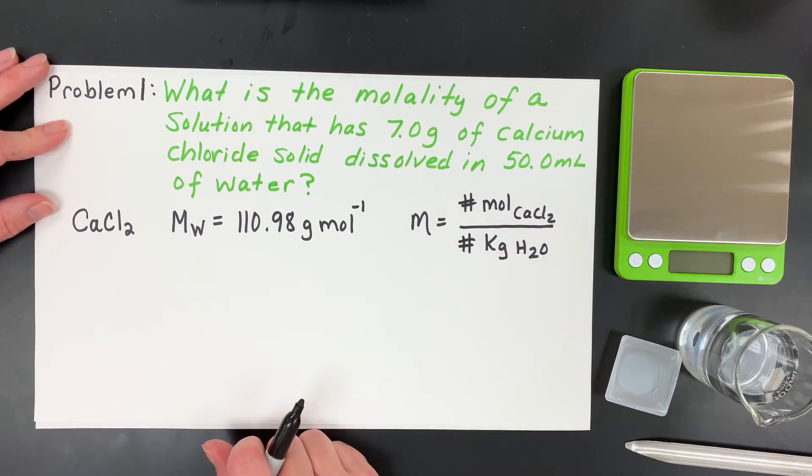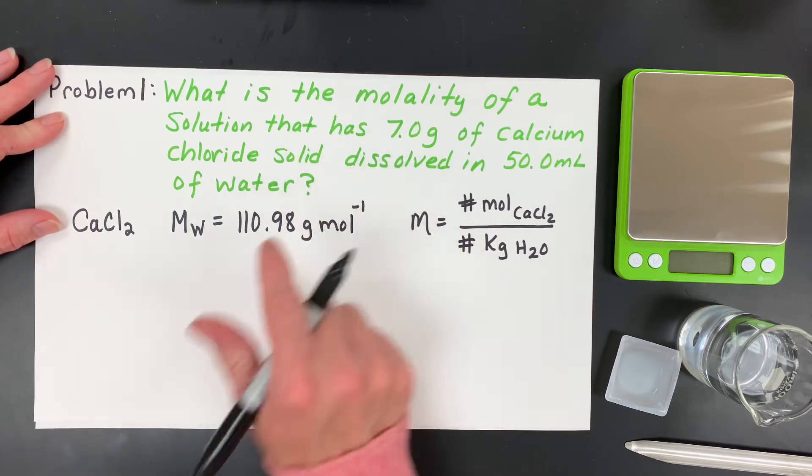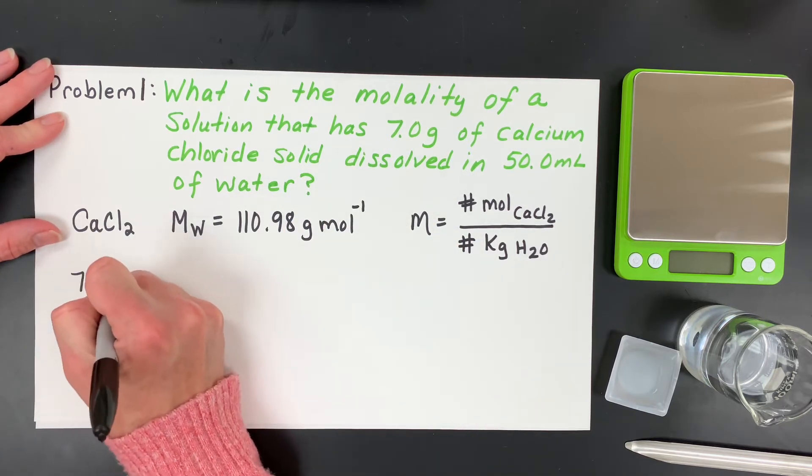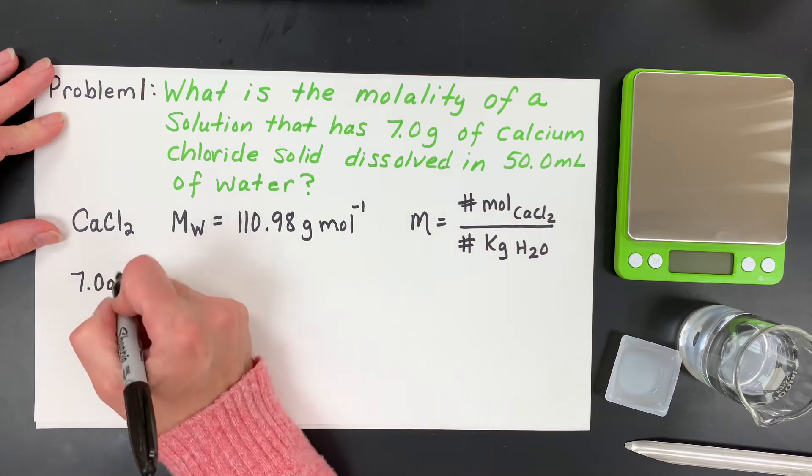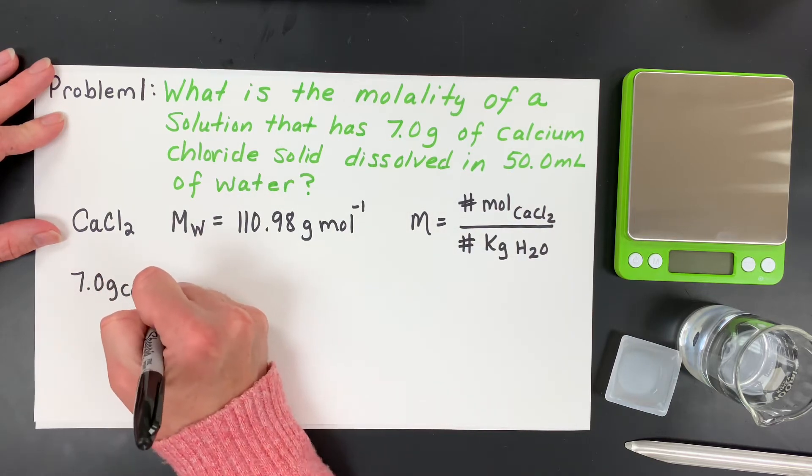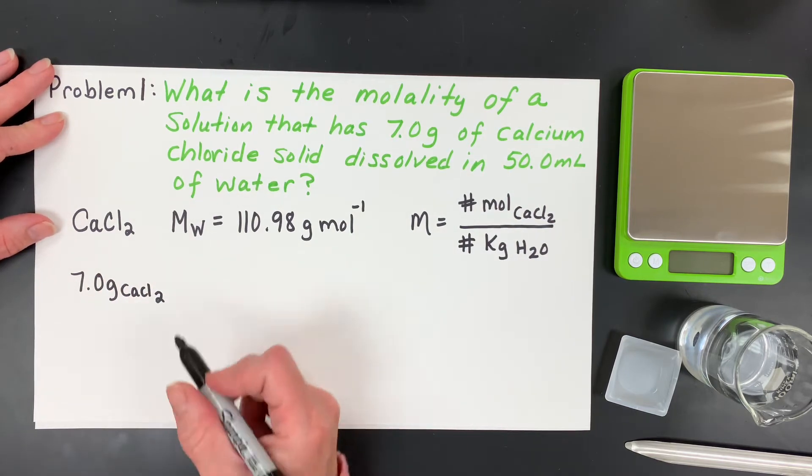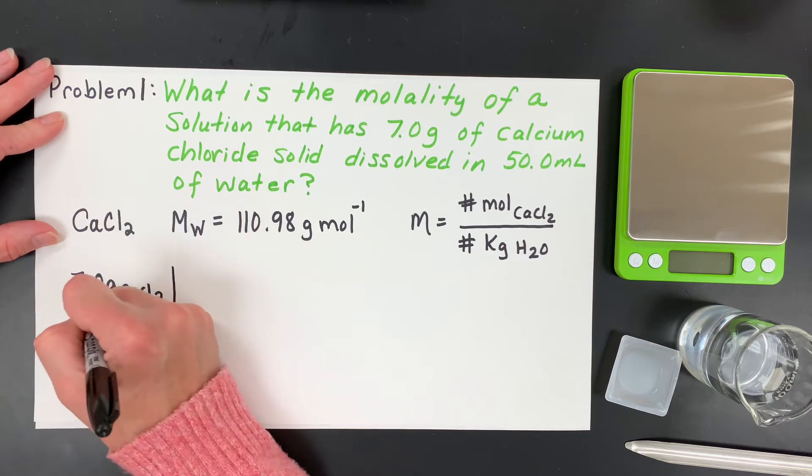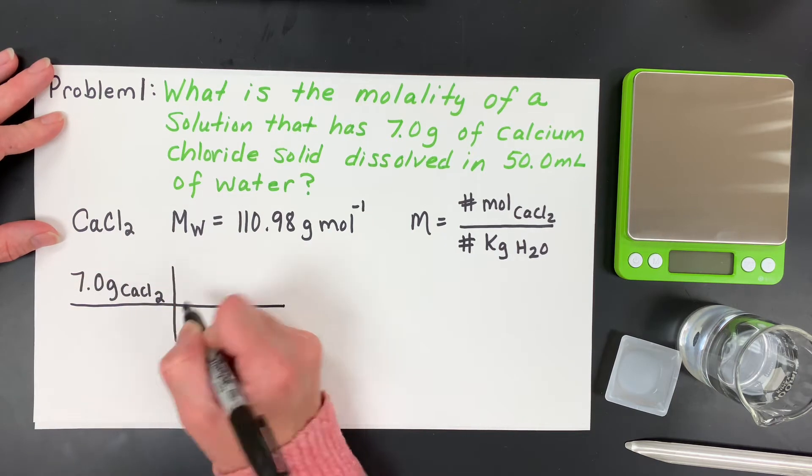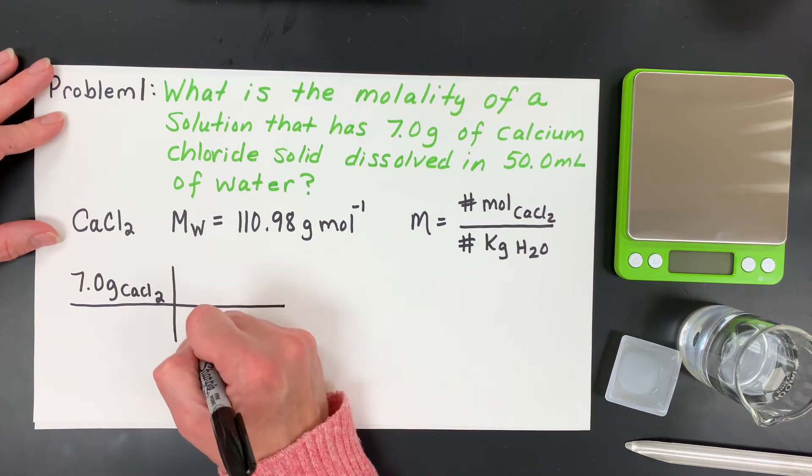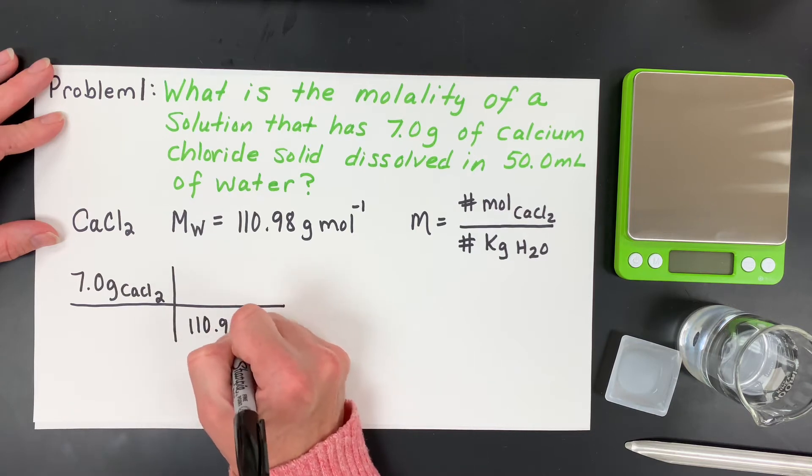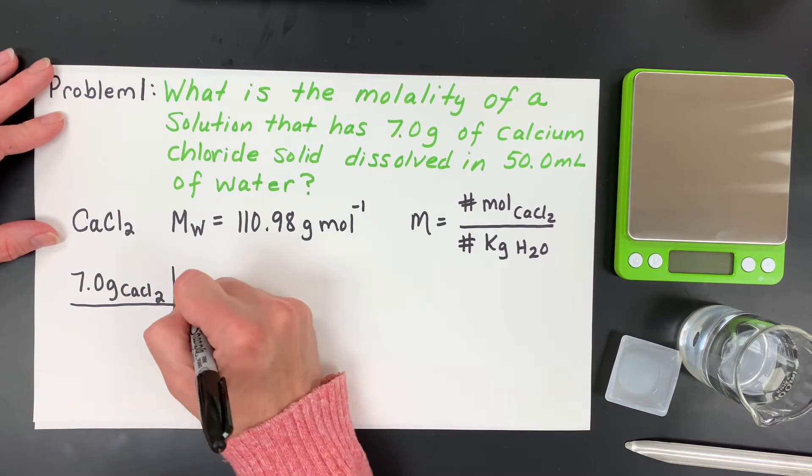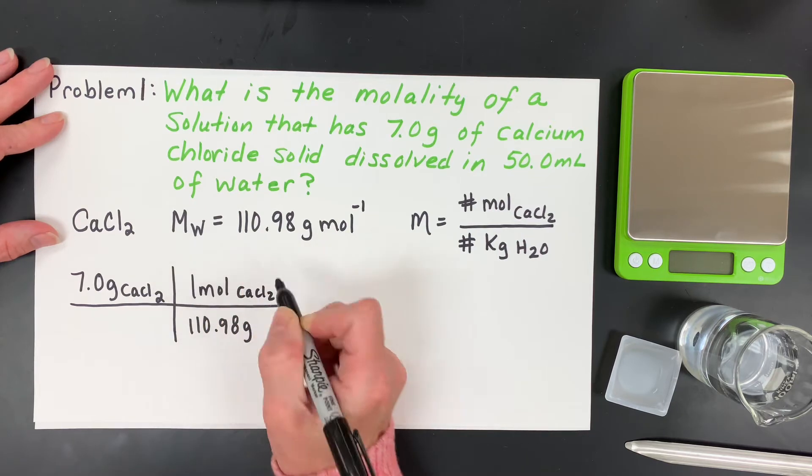But let's first solve for the moles. We know that we want to have moles in the numerator, so we're going to first find what that is. We have 7 grams of calcium chloride, and I'm going to divide that by 110.98 grams if I had one mole.